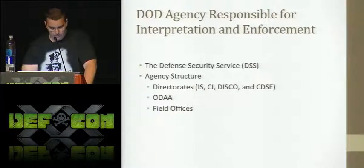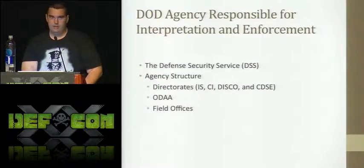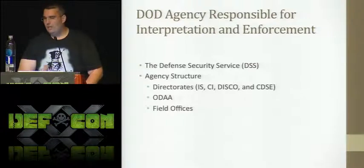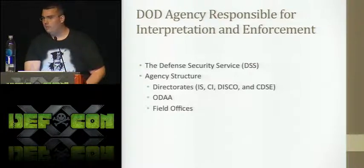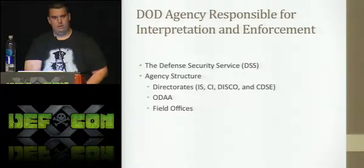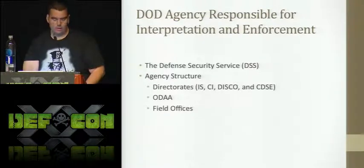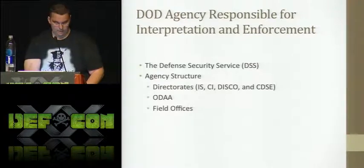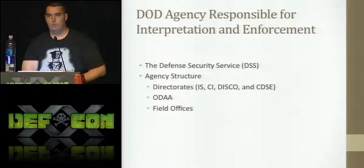There are four regionally dispersed DAAs — Designated Approving Authorities — these are GS-15s equivalent to a colonel or a Navy captain. They carry a lot of authority and they're the ones who derive security controls based upon where your company is located in the country: west coast, southern United States, east coast, and the capital region.